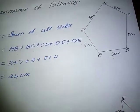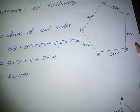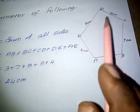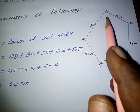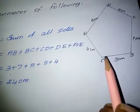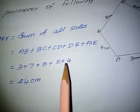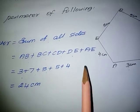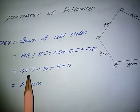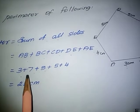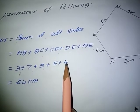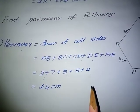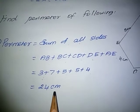AB is 3 cm, BC is 7 cm, CD is 5 cm, DE is 5 cm, and AE is 4 cm. So, 3 plus 7 plus 5 plus 5 plus 4. Adding: 3 plus 7 is 10, 5 plus 5 is 10, 10 plus 10 is 20, 20 plus 4 is 24 cm. So, the perimeter of the given shape is 24 cm.